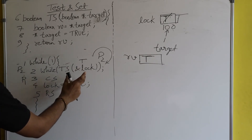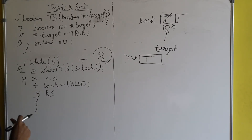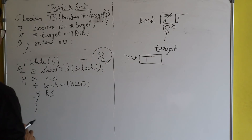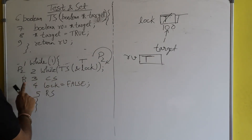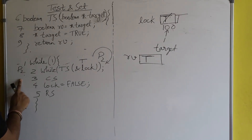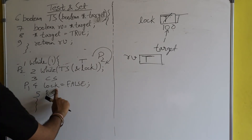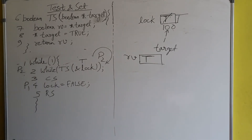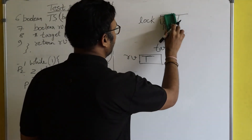P2 can come out of the while loop only when P1 comes out of the critical section. When P1 has finished its task inside the critical section, P1 will execute line number four, which sets lock = false. So the lock value will become false.